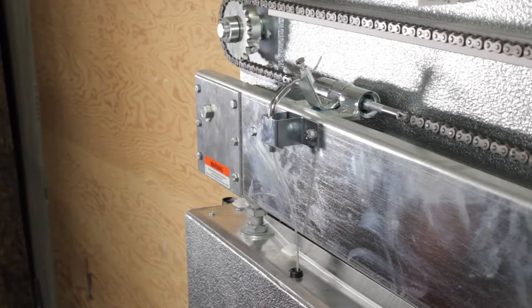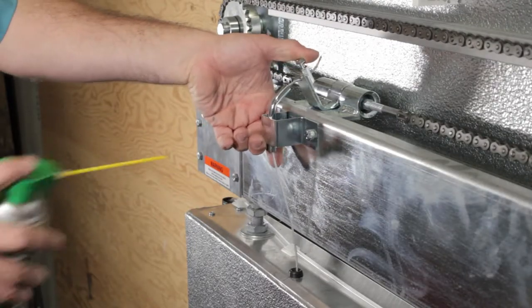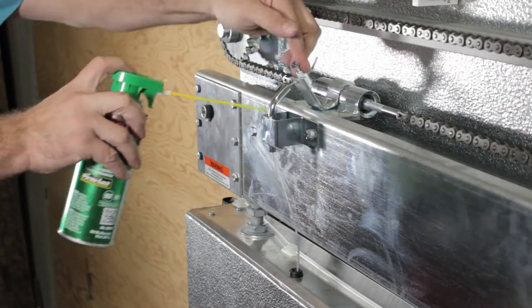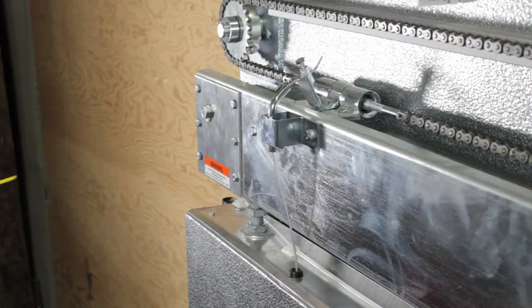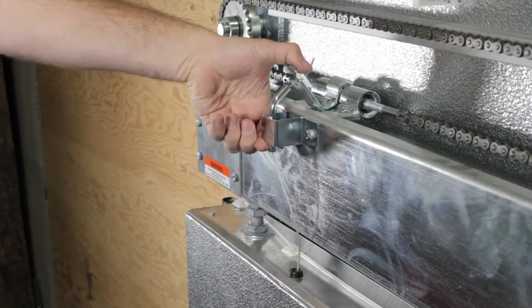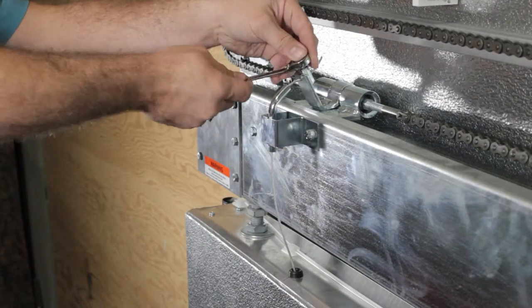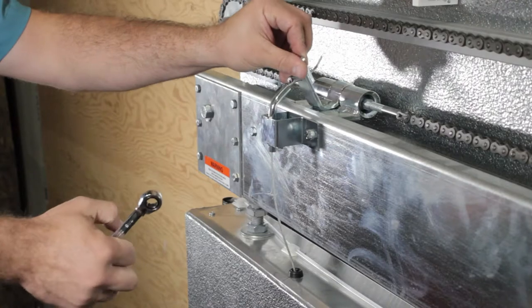In the same location, use the food-grade silicon spray to lightly lubricate the pivot on the release latch and the internal tube for the cable in the cable bracket. Take this time to inspect the cable for looseness and, if required, tighten the cable using the 7-16 inch wrench.